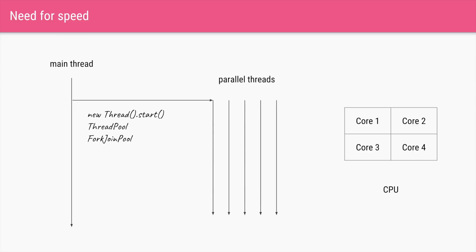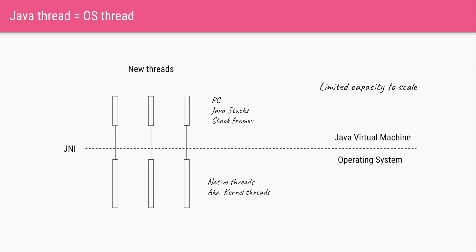We can do that using new Thread.start(), a thread pool, or fork-join pool and so on in Java. But creating too many parallel threads can cause a problem, because in Java every thread you create is actually an operating system thread, also called a native thread or kernel thread.